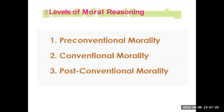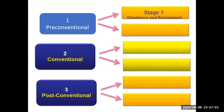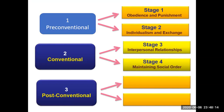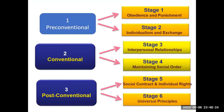Kohlberg divided the whole process into three levels. The first is pre-conventional morality, the second is conventional morality, and the third is post-conventional morality. These three levels are further divided into six stages, with each level containing two stages. The pre-conventional level has: obedience and punishment, and individualism and exchange. The conventional level has: interpersonal relationship, and maintaining social order. The post-conventional level has: social contract and individual rights, and universal principles.